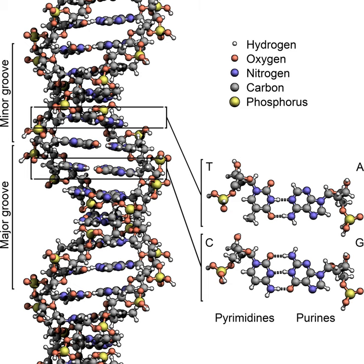These bases are classified into two types. Adenine and guanine are fused 5- and 6-membered heterocyclic compounds called purines, while cytosine and thymine are 6-membered rings called pyrimidines. A fifth pyrimidine base, called uracil, U, replaces thymine in RNA and differs from thymine by lacking a methyl group on its ring. Uracil is normally only found in DNA as a breakdown product of cytosine, but a very rare exception is a bacterial virus called PBS-1 that contains uracil in its DNA.